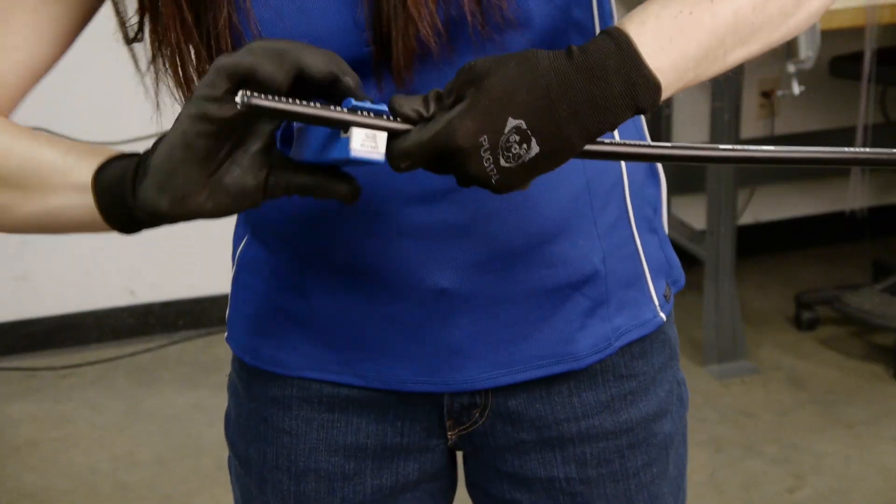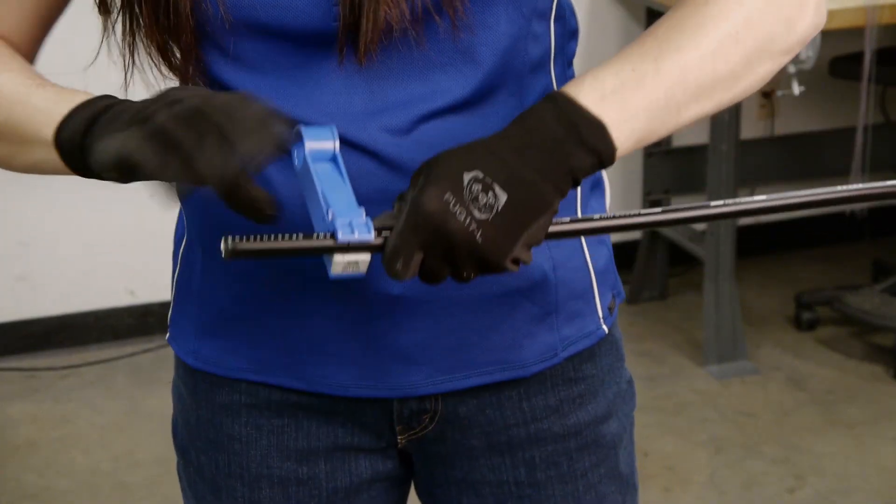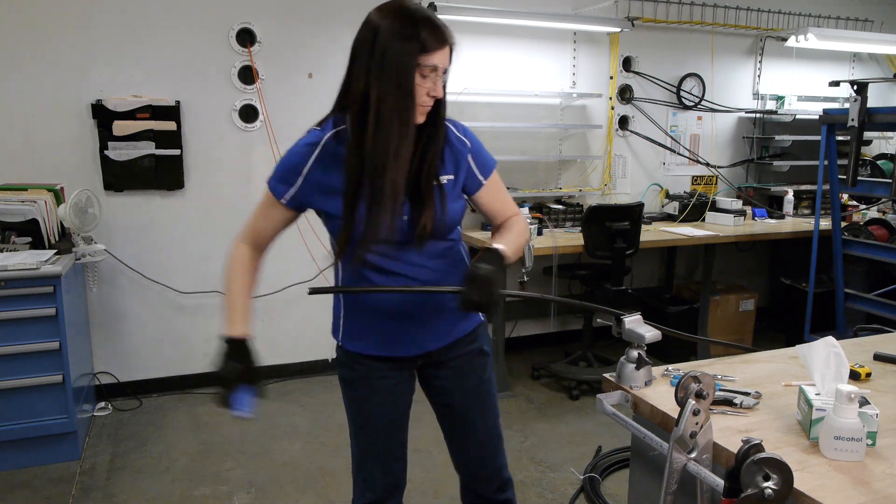Go to the end of the cable and score the jacket or armor about four inches from the end to expose the armor.